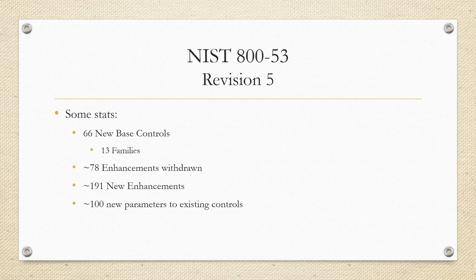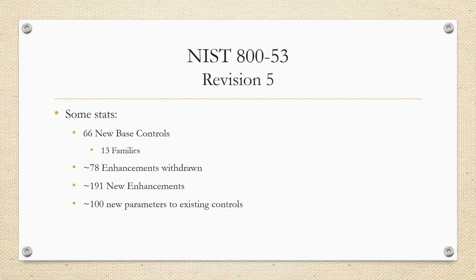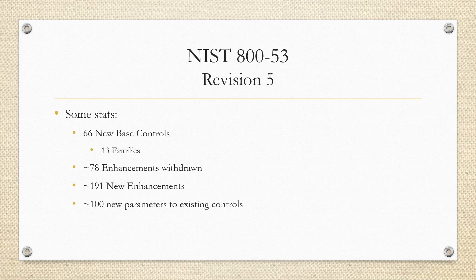Here are some high-level statistics on Revision 5. There are about 66 new base controls among 13 families, including a big portion from the two new control families — PII Processing and Transparency, and Supply Chain Risk Management — plus a few new ones throughout other families. About 78 enhancements were withdrawn and there are 191 new enhancements, a number that's even larger when you account for enhancements on the 66 new base controls. There are also about 100 new parameters added to existing controls. A lot changed in this document — obviously way too much to cover in one video. Thanks for tuning in to another episode of Audit Trails.